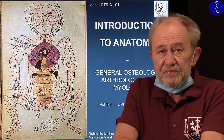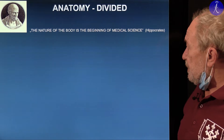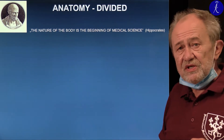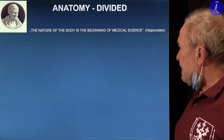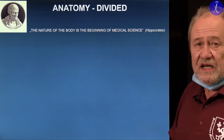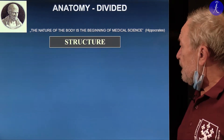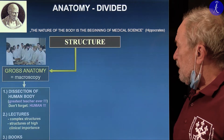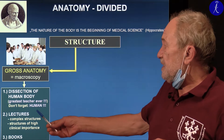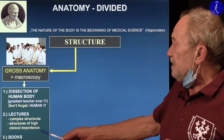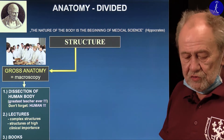Let's deal briefly with the components of anatomy. The mechanical structure of the body is the beginning of medical science, and that's why you start at the very beginning of your curriculum. This structure has different aspects. One is what you deal with in the dissection room — dealing with real bodies — that is gross anatomy, or macroscopy as it is called.